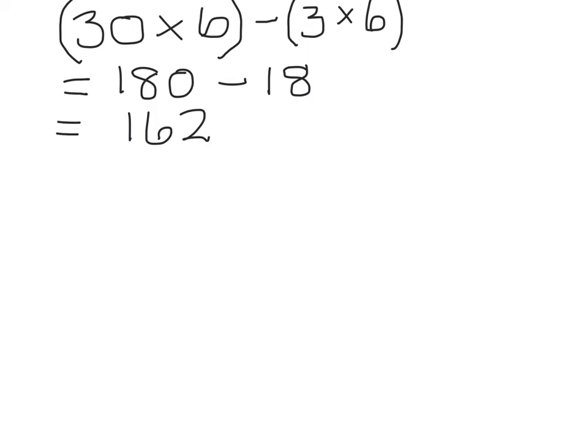So you can see that by rounding up, we were going to end up with an answer that was larger than it should have been. And so we compensate by subtracting the extra 3 lots of 6.